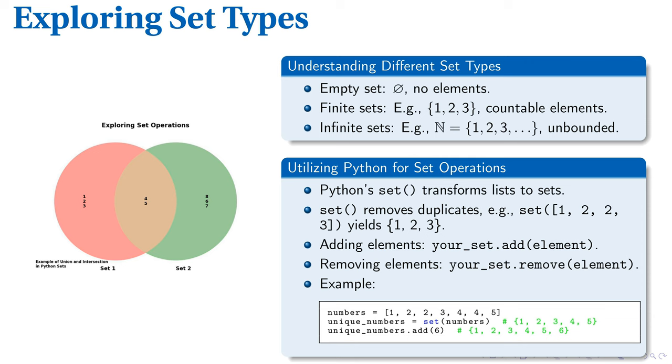Applying our knowledge to Python, we can create sets with the set() function. This function transforms lists into sets and automatically removes any duplicates, like set([1, 2, 2, 3]) which produces {1, 2, 3}. You can also add elements with your_set.add(element) or remove them using your_set.remove(element).